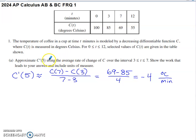Part A asks us to approximate C prime of 5 using the average rate of change of C on the interval 3 to 7. Show the work that leads to your answer and include units of measure. They don't always say to use the average rate of change on the interval 3 to 7. Sometimes they just say use the data in the table to approximate C prime of 5. So it would be on us to recognize that 5 is the midpoint of this stretch of the t-axis from 3 to 7.